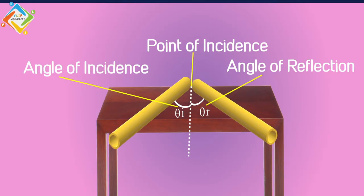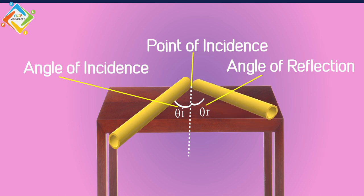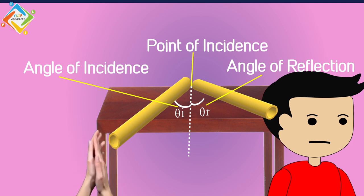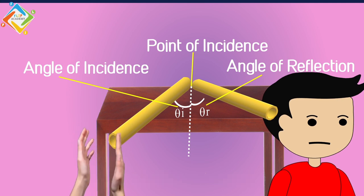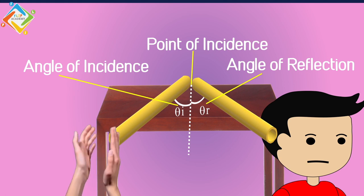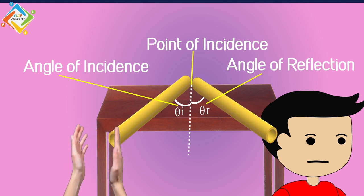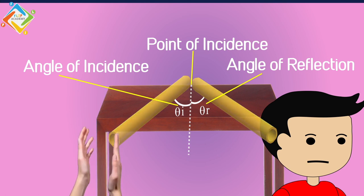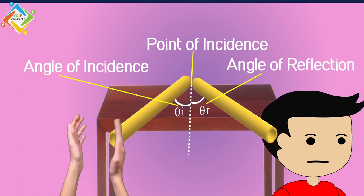For the second law — that all rays are on the same plane — take the cardboard roll placed at the second end and lift it slightly up. Now try to hear the sound — you will find you cannot hear it. Place it back on the table and listen — the sound returns. This means the table is the plane on which the first roll, the normal, and the second roll are all placed. The moment you disturb that plane, the sound is not heard. So sound follows the second law of reflection just as light does.